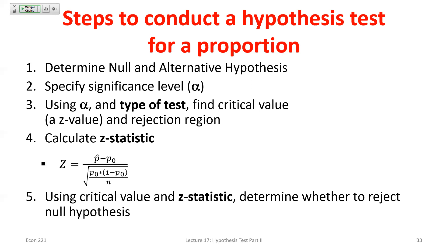We also have the critical value approach as an alternative to the p-value approach. They can both be used with either sample means or sample proportions — it's just a matter of which method you apply. The critical value approach sets a threshold Z-value ahead of time such that any test statistic more extreme than that threshold leads to rejection. This is distinct from computing the p-value and comparing it to alpha.